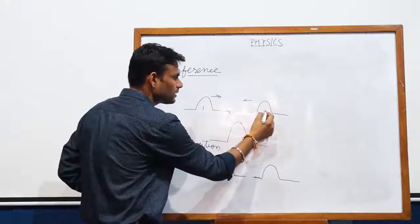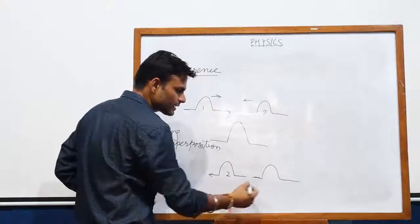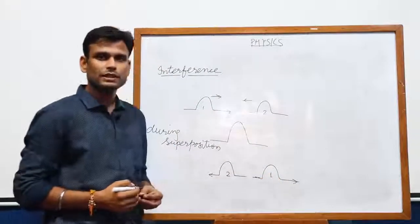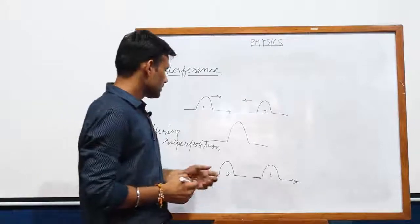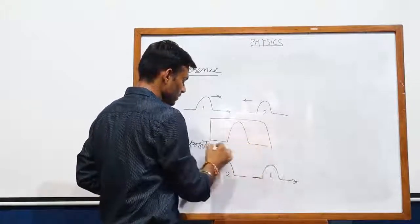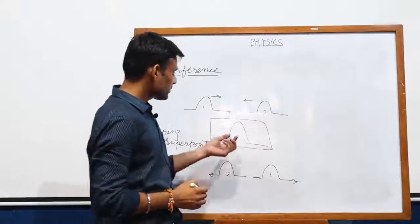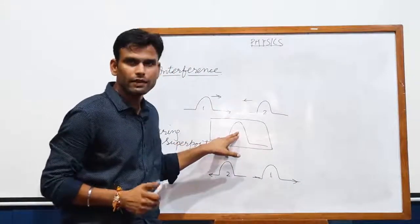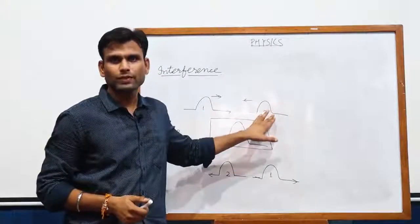Suppose this was beam 1 and this was beam 2. So beam 2 is now propagating in the negative x direction and beam 1 is now propagating in the positive x direction. This is the main point of focus: the amplitude of the resultant wave changes according to the phase of these two waves.